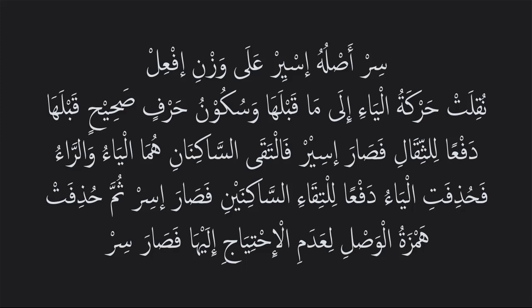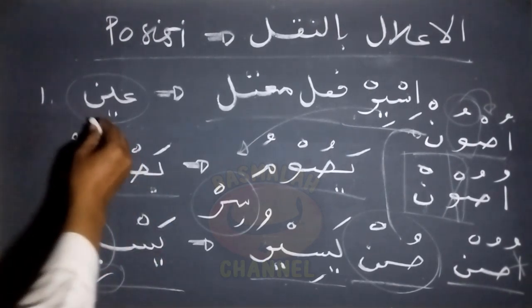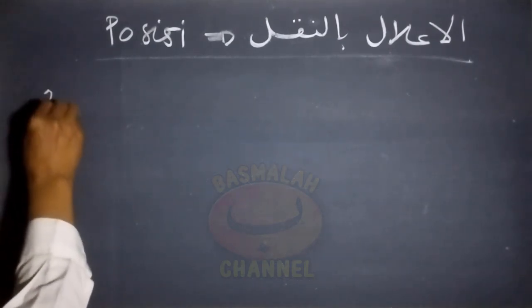Fahudifatil ya'u daf'an liltiqo isakinaini, maka dibuanglah huruf ya' untuk menghindari bertemunya dua huruf yang sukun, fasara isyir, maka jadilah lafad isyir. Tumah hudifat hamzatul wasli, selanjutnya hamzah wasol dibuang li'angdamil ihtiyaji ilaiha, karena keberadaan hamzah wasol tersebut sudah tidak dibutuhkan lagi, fasara sir, maka jadilah lafad sir. Ini adalah keadaan yang pertama dimana al-i'lal bin naqli terjadi pada ain fi'il dari fi'il mu'tal.